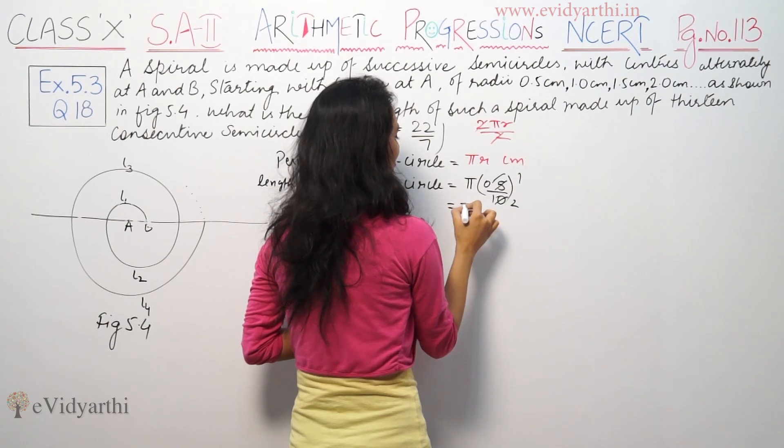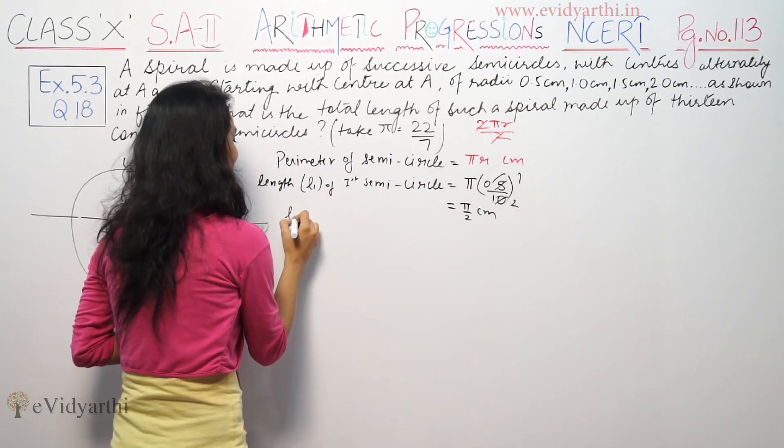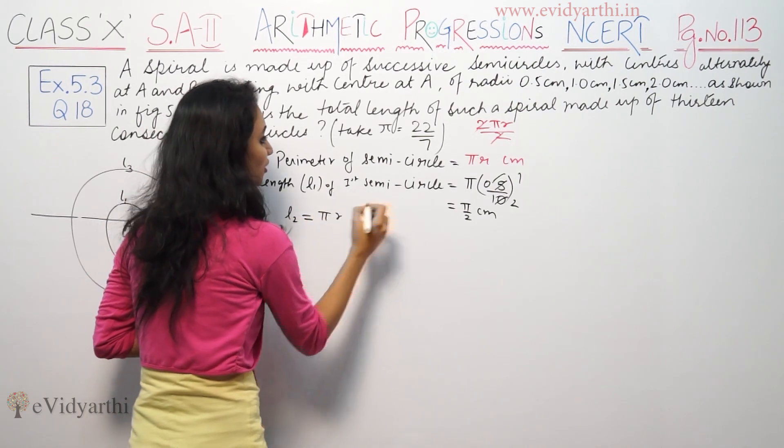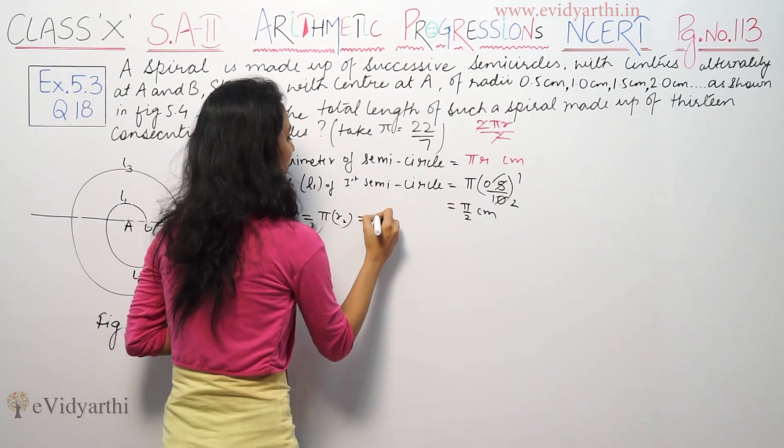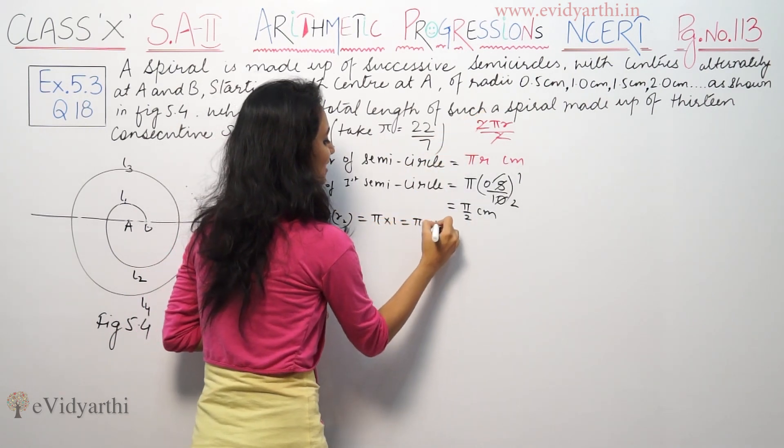This is the second semicircle. Same with the second semicircle, πR2. R2 is 1, that means π cm.